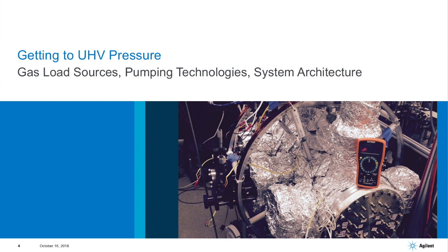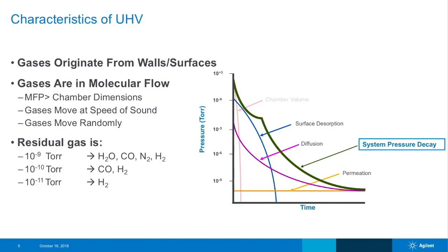Let's talk about how we get to UHV pressures — some gas load sources, some of the pumping technologies available, and a little bit on the architecture of a typical UHV system. In UHV, we're talking about gases coming off walls and surfaces, so we're really not that concerned with the chamber volume, only in the way that impacts the internal surfaces. We need some sort of baking, which is the best mechanism we have today for driving off molecules — typically water — off the surface, and we can then get to the true nature of a UHV system.